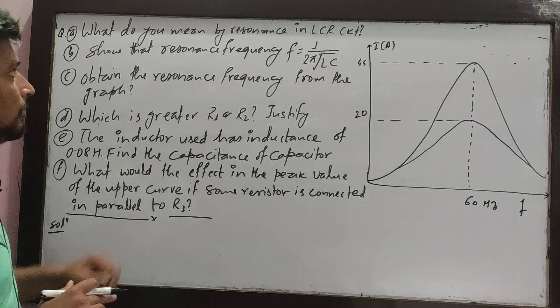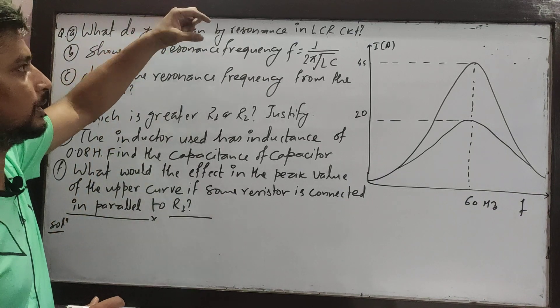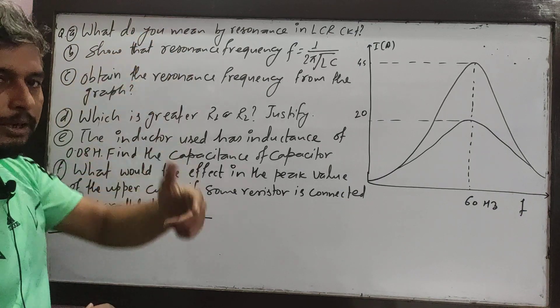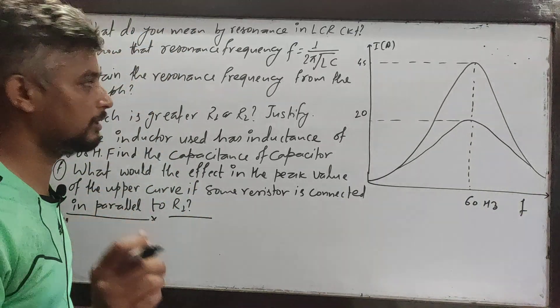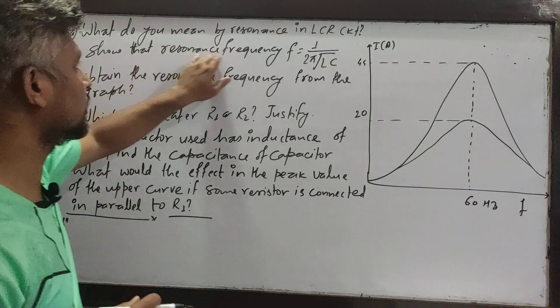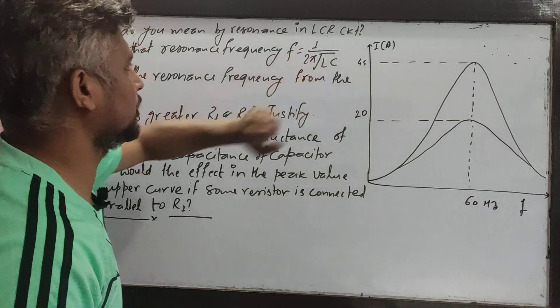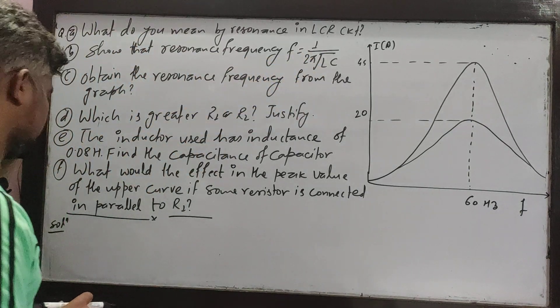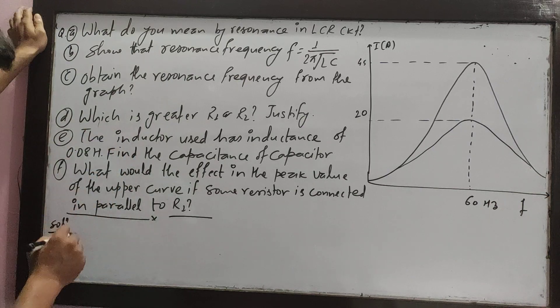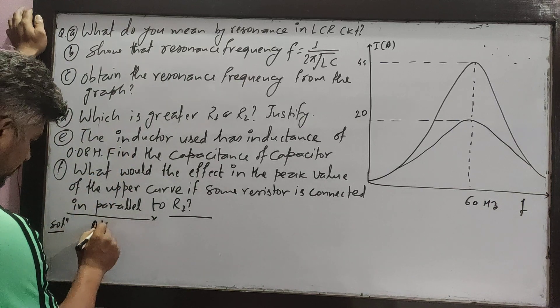This condition is resonance — I will take a short answer. So the resonance frequency F is equal to 1 by 2 pi root of LC. It is very easy. I will derive it.